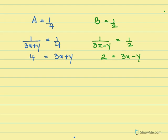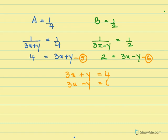Now I have two new equations: 3x plus y equals 4, which I'll call equation 5, and 3x minus y equals 2, which is equation 6. Since plus y and minus y are opposite in sign, I add equations 5 and 6. The y terms cancel out and I get 6x equals 6, so x equals 1.